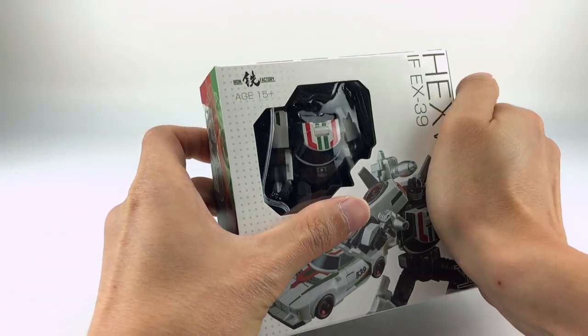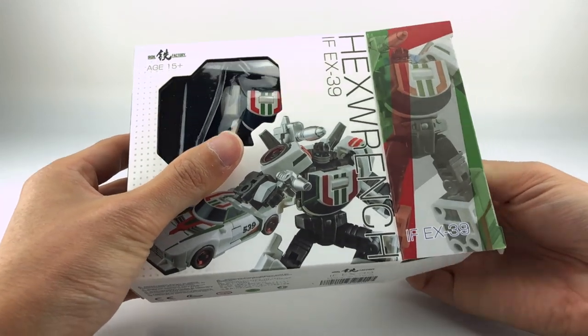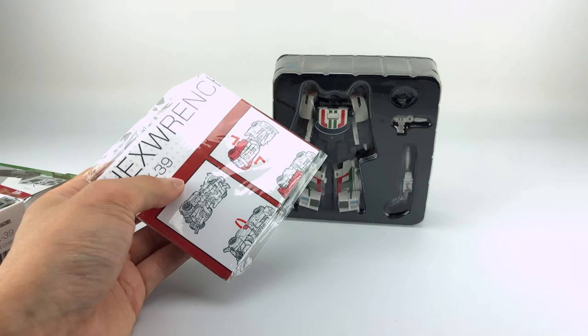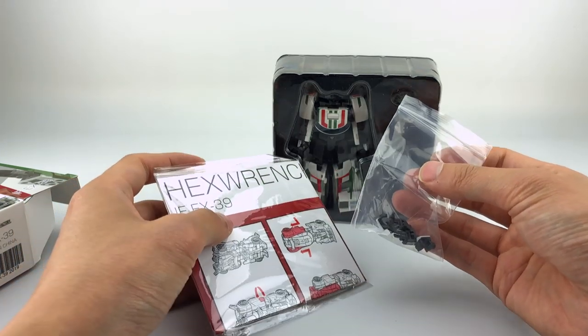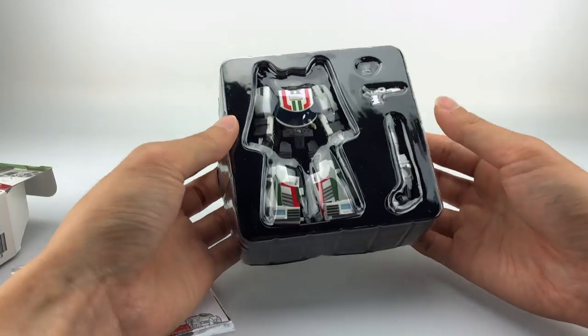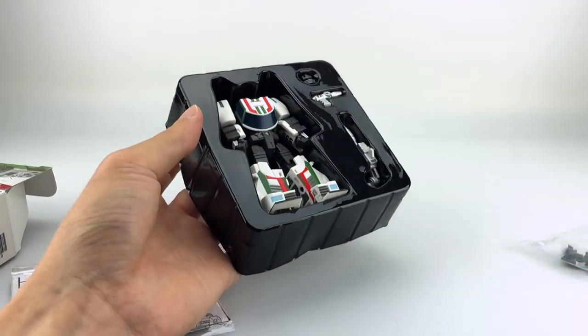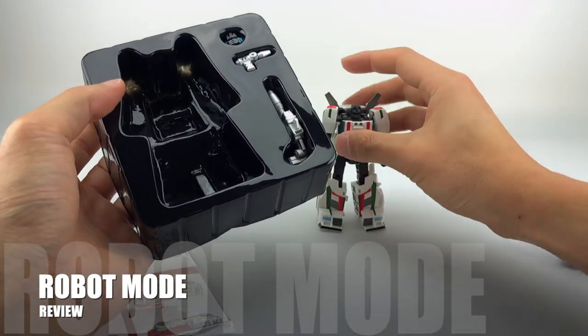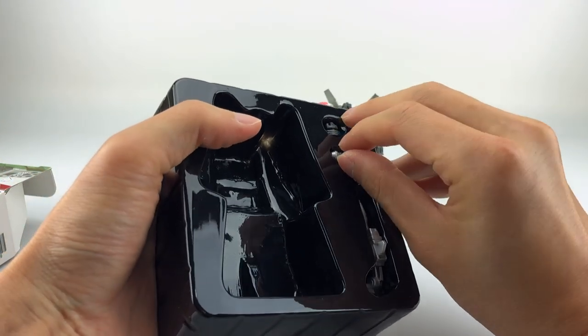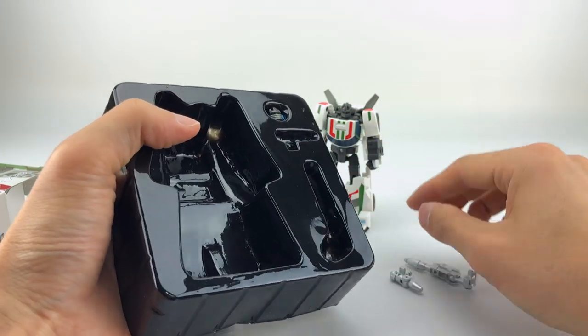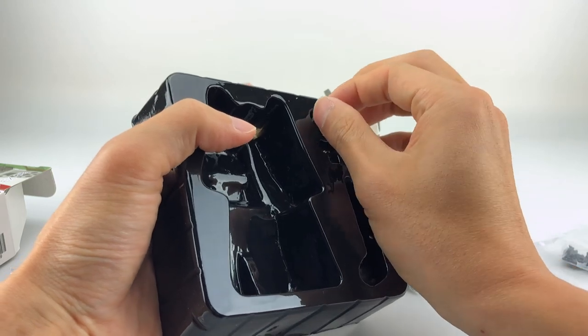Out of the packaging, we actually get the clamshell, as well as some instructions that we have here, and a bag of goodies. So these are the extra hands that he has. Inside the clamshell itself, he has Hex Wrench, obviously. We have his little gun, his shoulder missile, and an extra head.